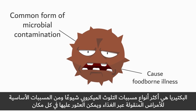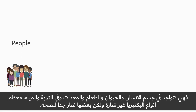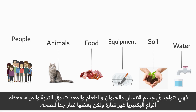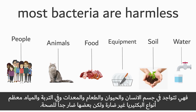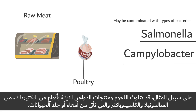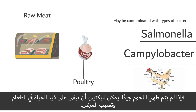Bacteria are the most common form of microbial contamination that cause foodborne illness, and they can be found everywhere — on people, animals, food, equipment, and in soil and water. Most bacteria are harmless. However, some aren't. For example, raw meat and poultry may be contaminated with bacteria called salmonella and campylobacter that come from the intestine or skin of the animals. If the meat is not cooked well, the bacteria can stay alive in the food and cause illness.